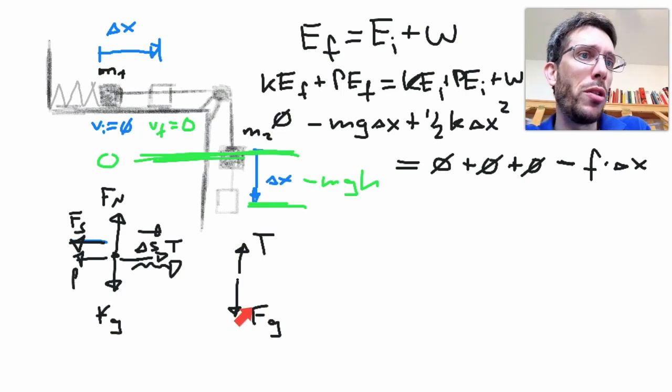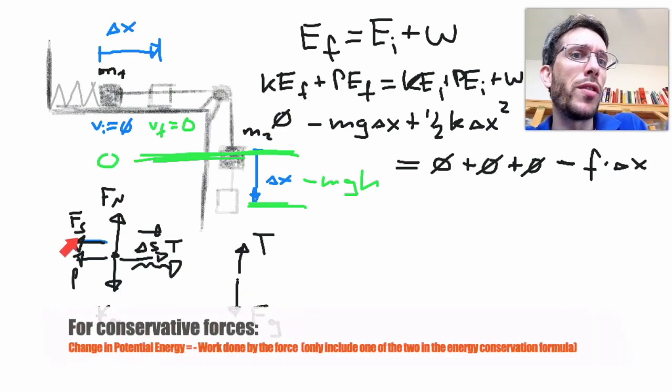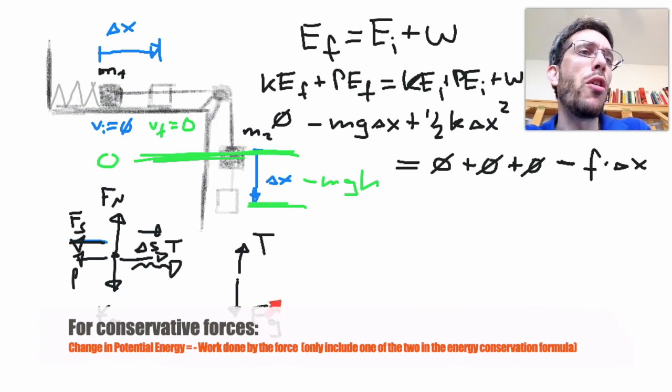So in the case of my second mass, my force of gravity does work, but now the same thing as we have for the force of the spring, if we consider the potential energy of that conservative force, then we should not consider the work of that force. So in this case we considered the potential energy of gravity, therefore we do not consider the work done by gravity.